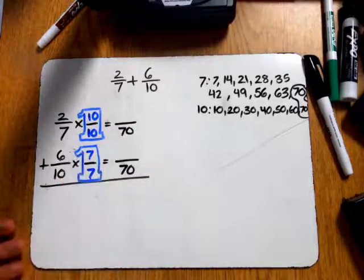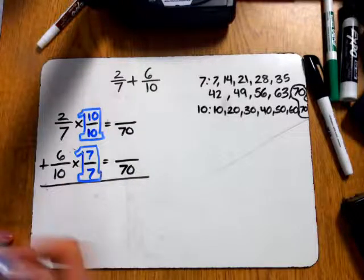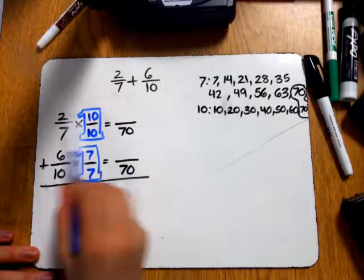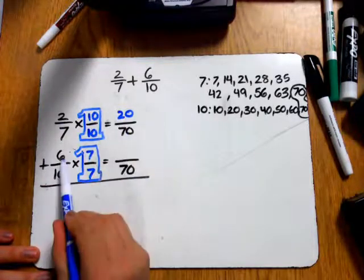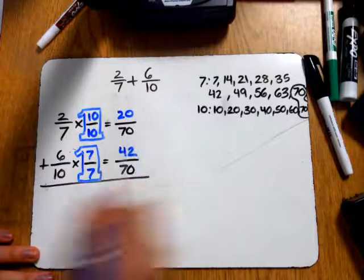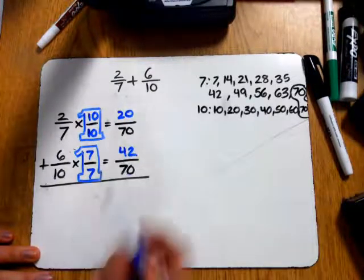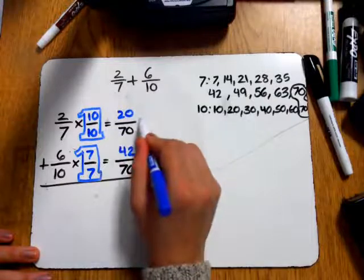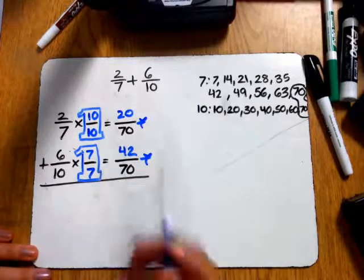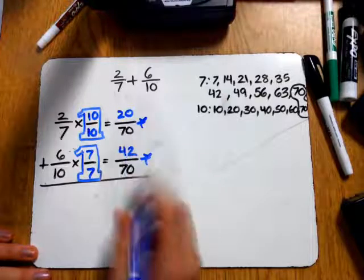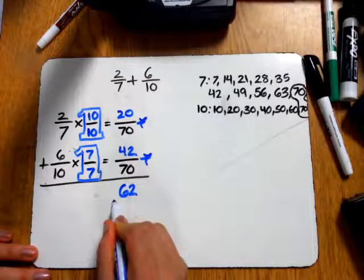Okay, and now I can go ahead and multiply my numerator by my numerator, and my denominator by my denominator. 2 times 10 is 20, and then 7 times 10 is 70. 6 times 7 is 42. 10 times 7 is 70. Now I can go ahead and add these two fractions together because they have common denominators. And I know that 20 plus 42 is 62 over 70.